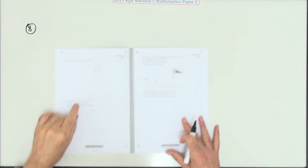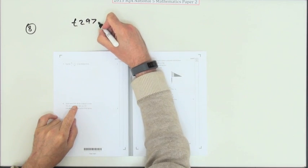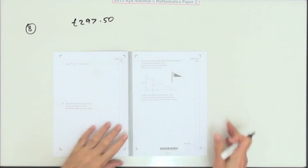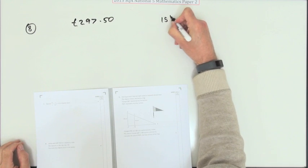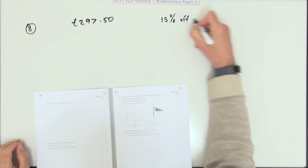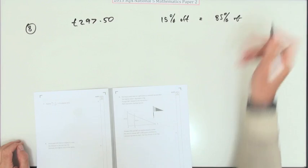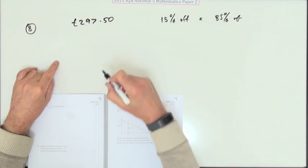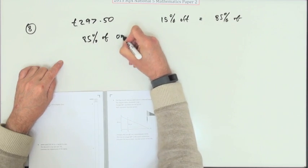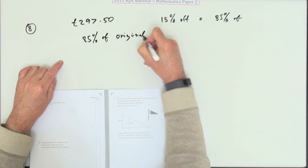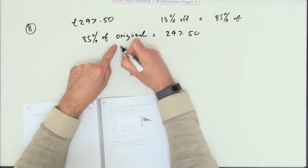Number eight. So in a sale this laptop cost £297.50, that was after having 15% off. Well, 15% off is the same as 85% of the original thing. So 85% of the original, maybe you could have set it out: 85% of the original came to £297.50.